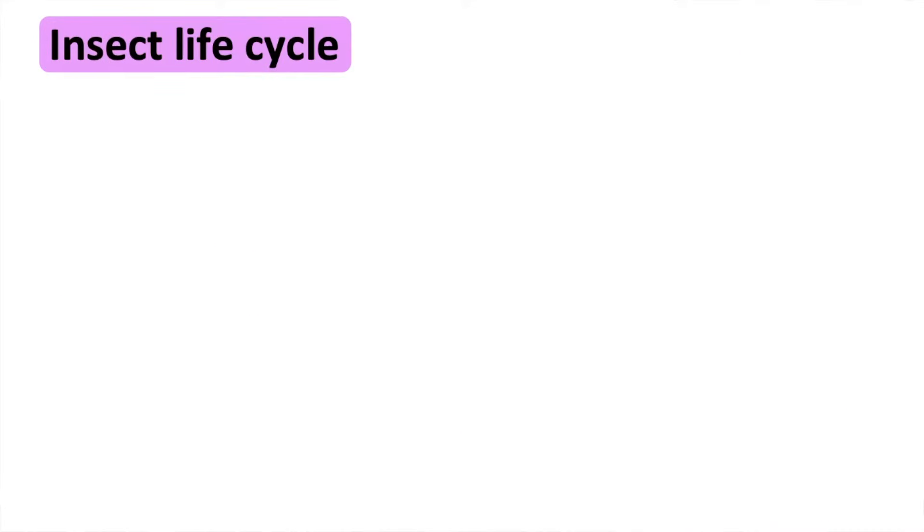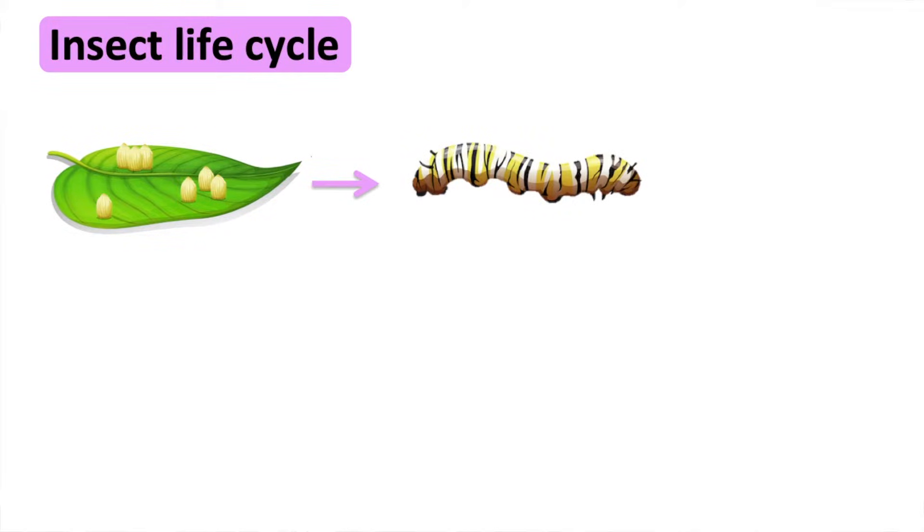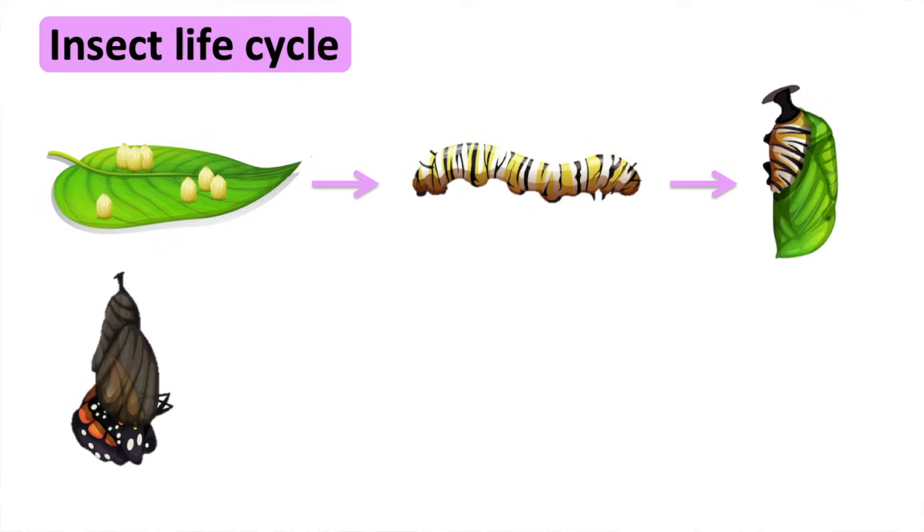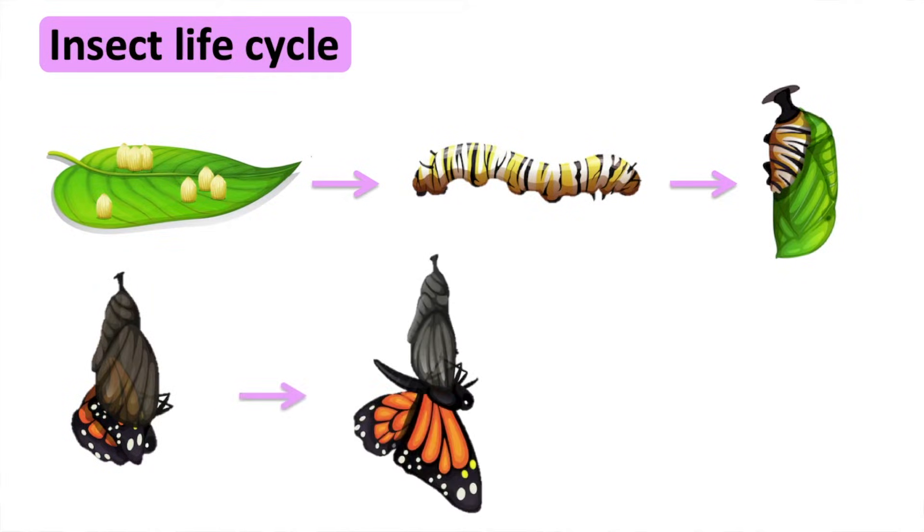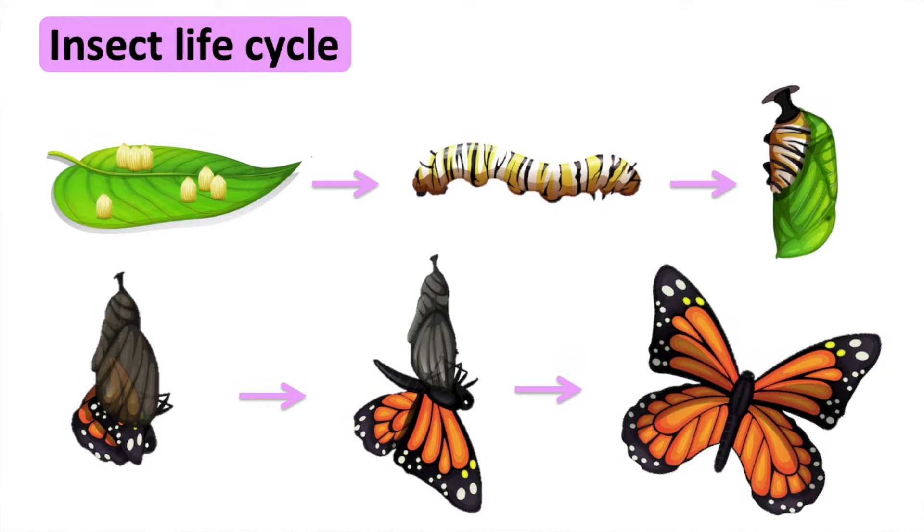Insect life cycle. First the insect lays eggs. Larva is an immature form of an insect. It hatches from the eggs. Larva then becomes a pupa and it changes into an adult insect.